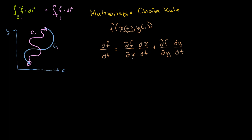I'm not going to prove it, but the intuition is: as I move a little bit dt, how much does f change? There are two ways f can change — with respect to x and with respect to y — so we add those two contributions together, each scaled by how fast x and y change with respect to t. If you imagine canceling the partial x with dx and partial y with dy, you get the total change of f with respect to t. It's a pretty intuitive formula.